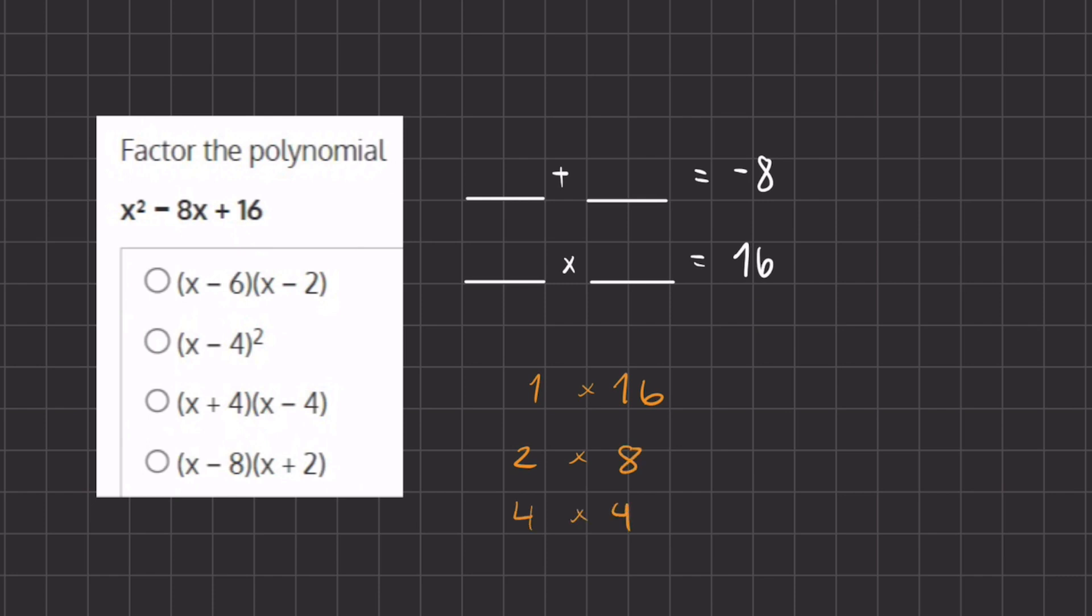Now the only two numbers that can yield this negative 8 and this positive 16 when we're multiplying is negative 4 and negative 4. So if we add negative 4 and negative 4, we get negative 8, and if we multiply negative 4 times negative 4, we get a positive 16, because a negative times a negative gives us a positive.